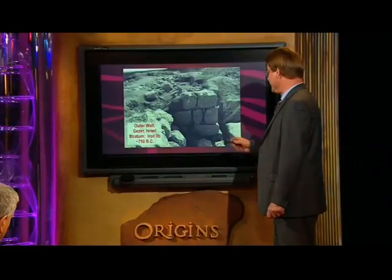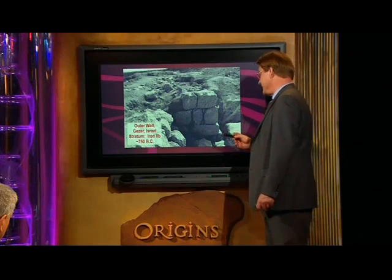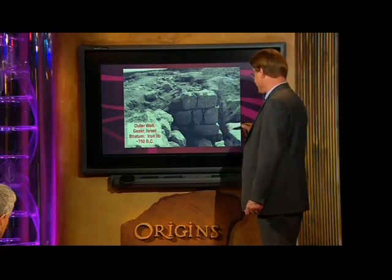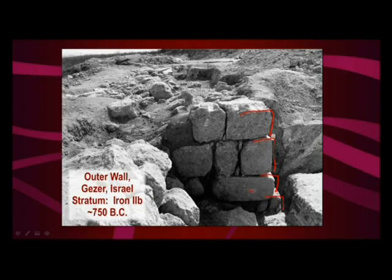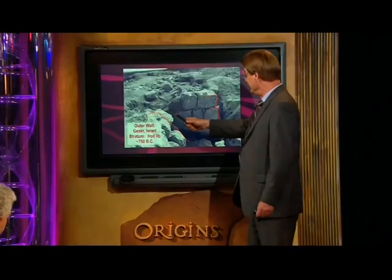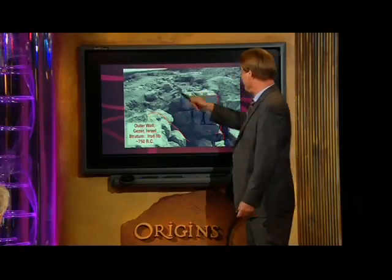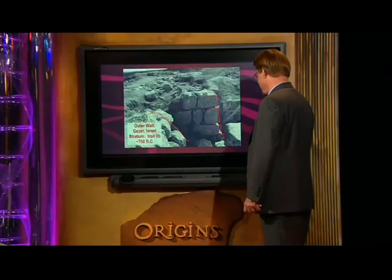Also evidence of Amos' earthquake is the outer wall of Gezer, in the foothills of Israel on the western side of the Judean mountains. You can see the displacement of the levels of these different hewn stone blocks — they are offset or shifted. These stones weigh 1,000 pounds each, and they're displaced off their foundation. The wall is falling off on both sides. The excavator there said, 'This is a no-brainer — we have a big earthquake.'